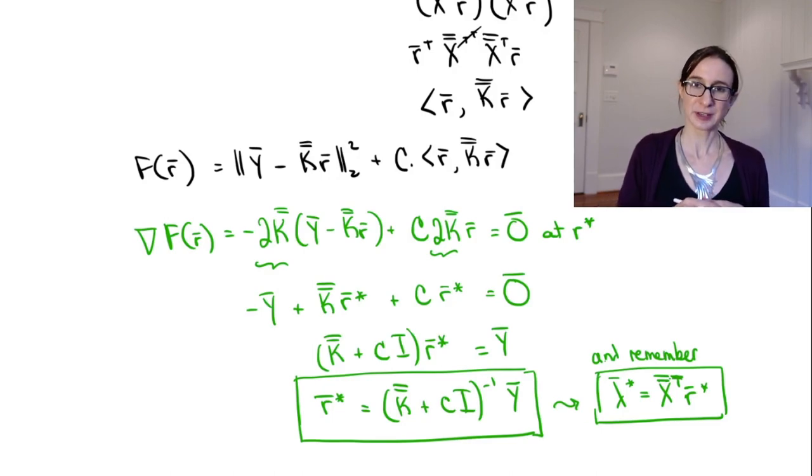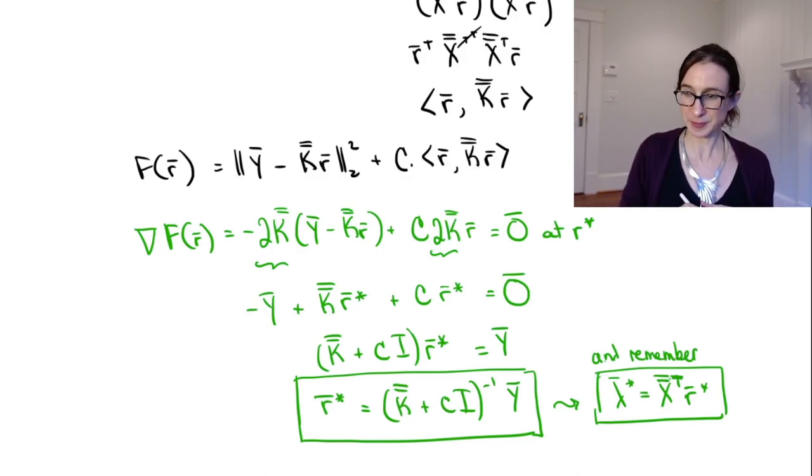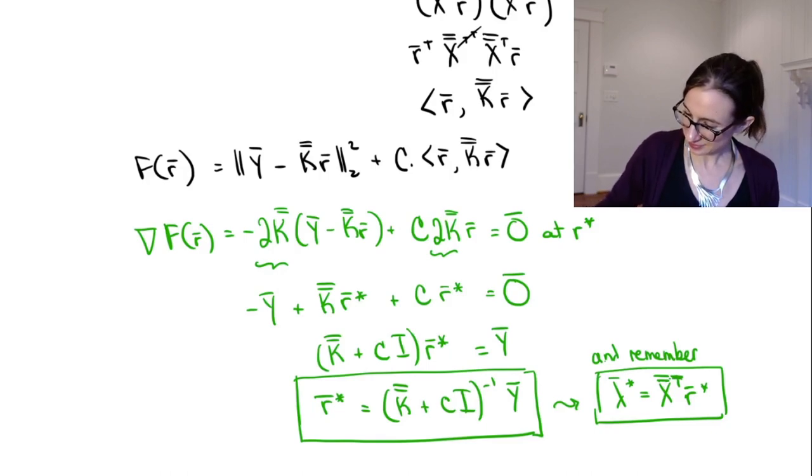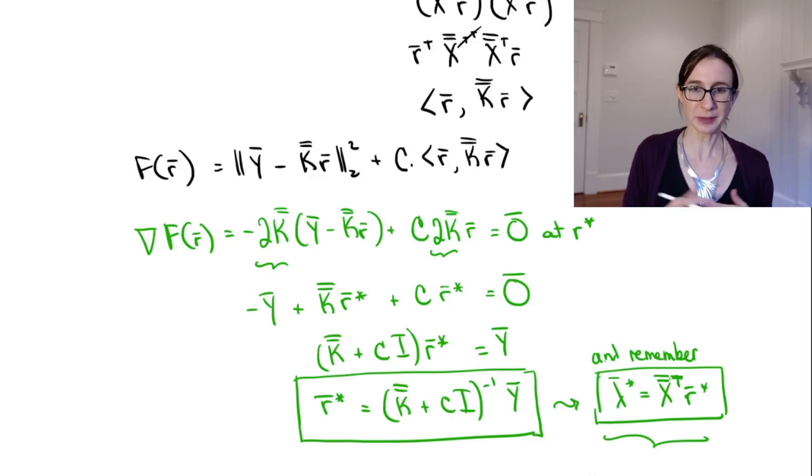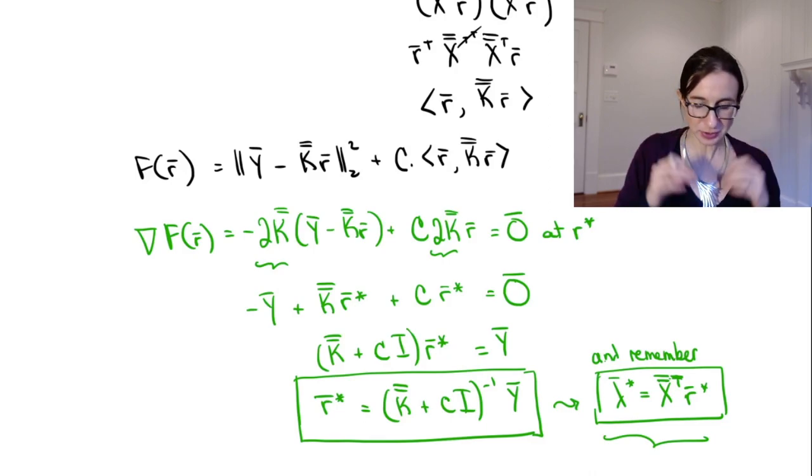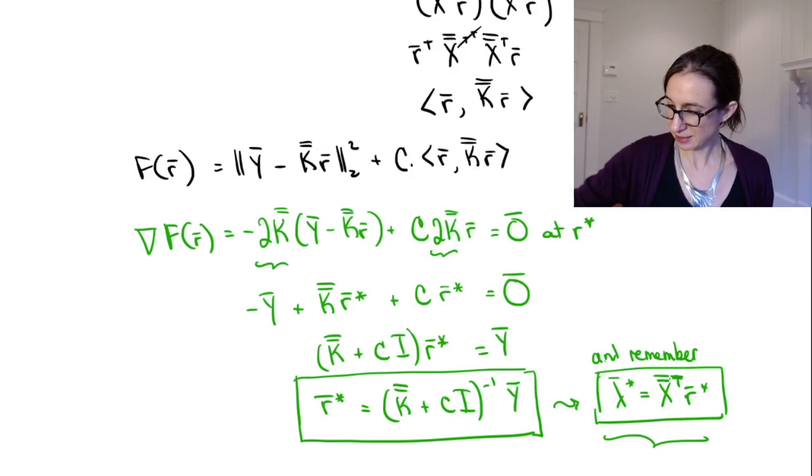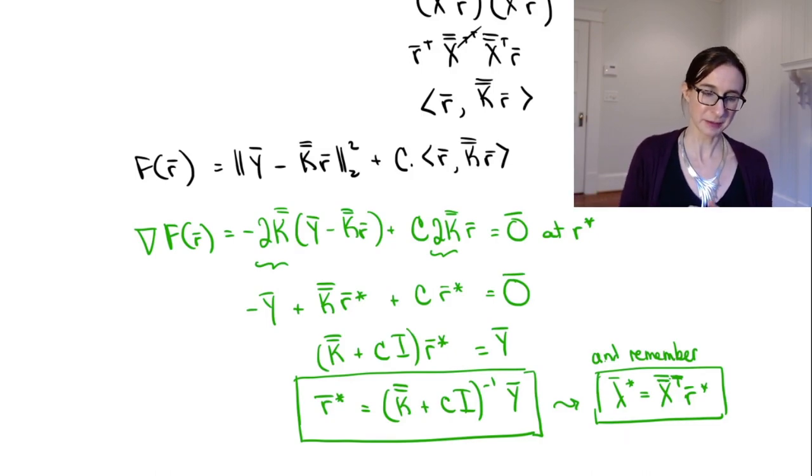So for instance, if you have mapped to, through the kernel to a different space, and you don't actually know what the map is, then this procedure is actually not possible to do. So we need a way to make predictions that just goes through the kernel and doesn't require our knowledge of the map. Okay.